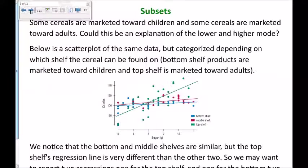Some cereals are marketed towards children and some cereals are marketed towards adults. Could this be an explanation of the lower and higher little mode that we saw in the histogram of the residuals? Below is a scatter plot of the same data but categorized depending on which shelf the cereal can be found. The bottom shelves are marketed towards children and the top shelves are marketed towards adults.